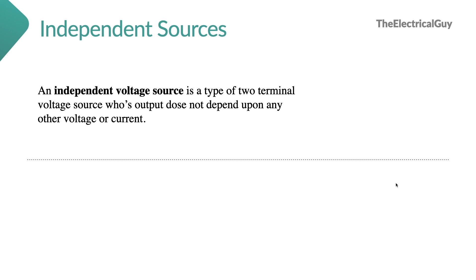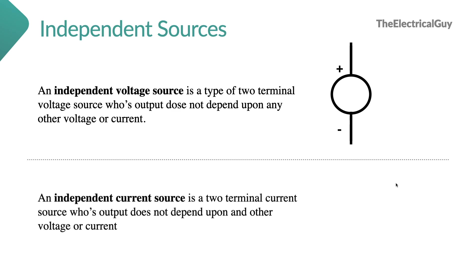It is denoted by this symbol. Similarly, an independent current source is a two-terminal current source whose output does not depend upon any other voltage or current, and it is denoted by this symbol. The arrow indicates the direction of current. Whatever sources we have learned in the previous lesson of this series are independent sources.